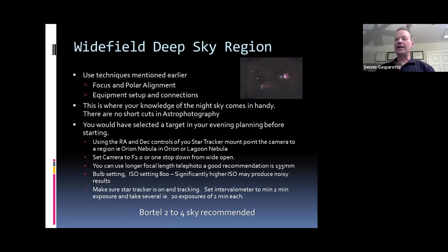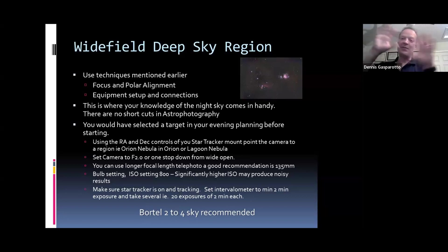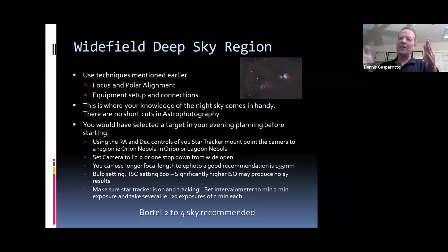For longer focal lengths with deep sky region, when starting out a good lens to work with is 135mm — it's a good compromise. Less than that and you'll lose some detail. If you want Milky Way included with something else, a wider lens is fine. But for deep sky regions you need around 135mm as a starting point, then work your way up from there.